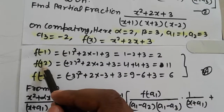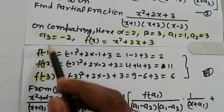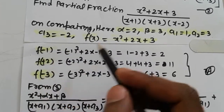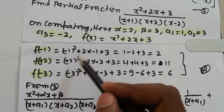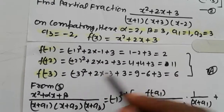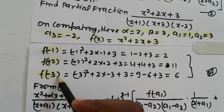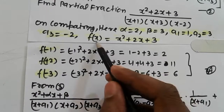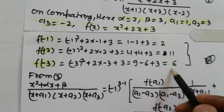For f of minus a3, since a3 is minus 2, we put x equal to 2 and simplify to get 11. For f of minus a2, since a2 is 3, we put x equal to minus 3 and simplify to get 6.